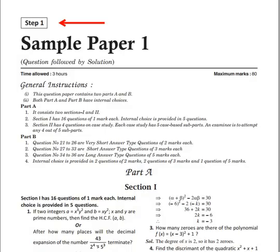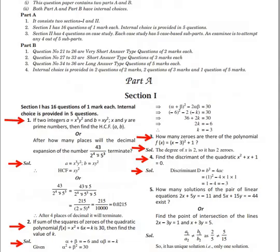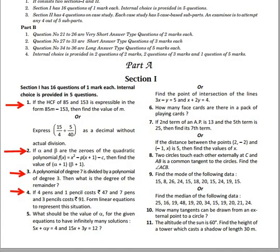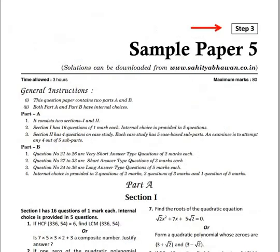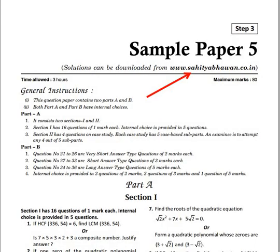In Step 1 sample papers, the questions are followed by the solutions. In Step 2 of the sample paper, the solutions of the questions are provided at the end of the sample paper. In Step 3, the final step, the solutions of the questions are provided at the website www.sahitbhavan.co.in.